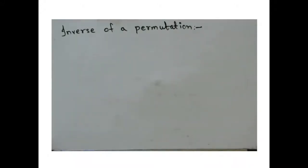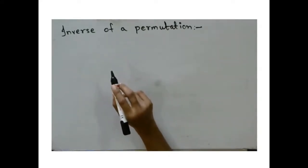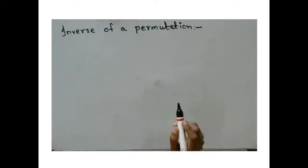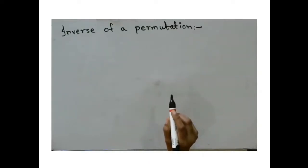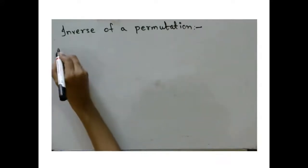Hello everyone. In the last video we have seen how to write a cyclic permutation in standard format. Now let us see how to find the inverse of a permutation. Since a permutation is a bijection from the set of n elements to that set only, the inverse will obviously exist.